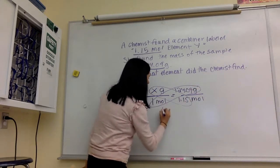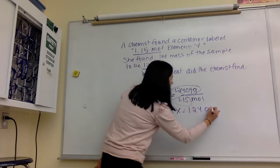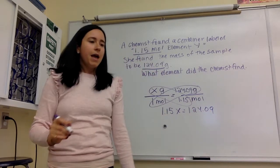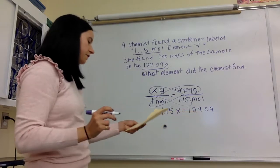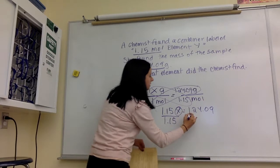And I end up with 1.15x equals 124.09. At this point, I'm then going to divide both sides by 1.15 to get the x by itself.